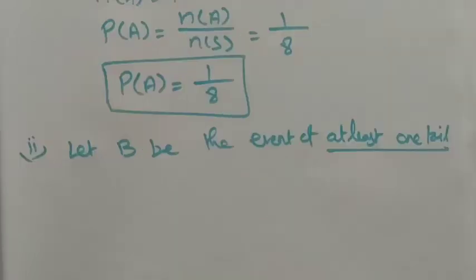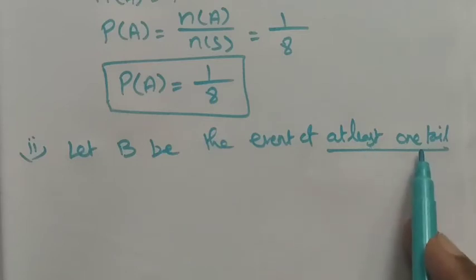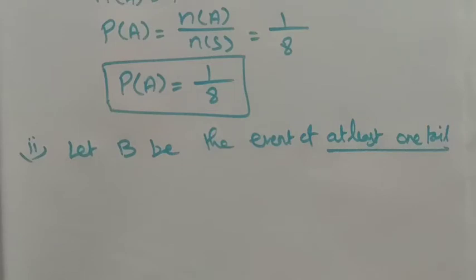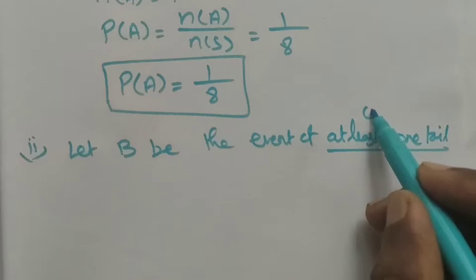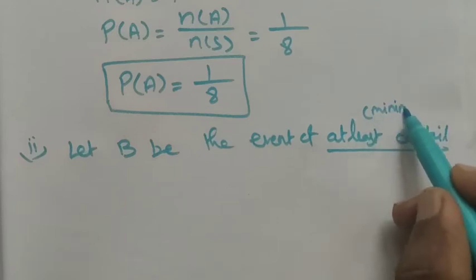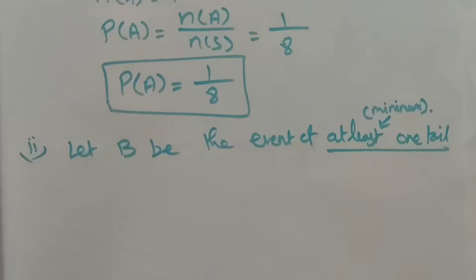Second event: let B be the event of at least one tail. 'At least' means minimum. For example, like a minimum passing mark of 35 — you can score 35 or above, up to 100. So 'at least one tail' means minimum one tail; maximum can be two tails or three tails.